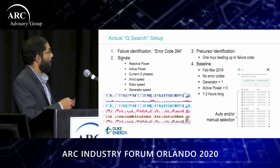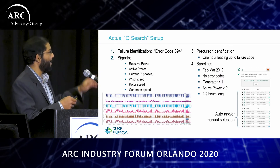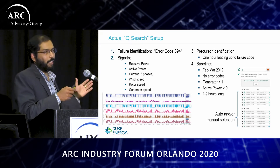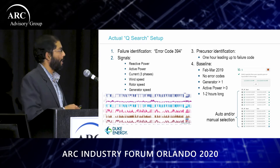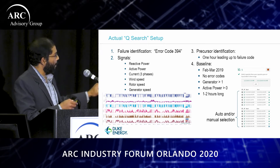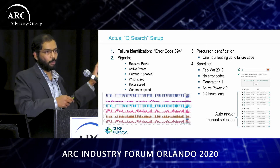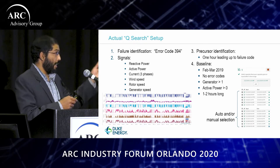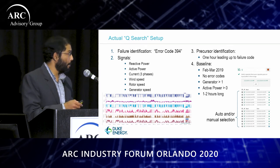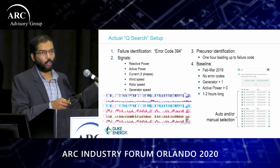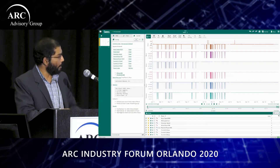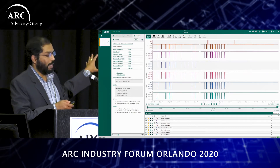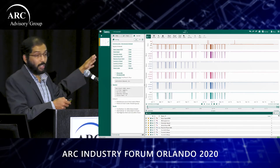This is the actual QSearch setup that we used. We are looking for error code 364, which the control system provides. There is a list of signals we went with in the first pass as having potentially useful information. We decided on a one-hour time frame and defined certain parameters for what constitutes normal operation. In the bottom right corner, there was a panel window which I'll show in the video.